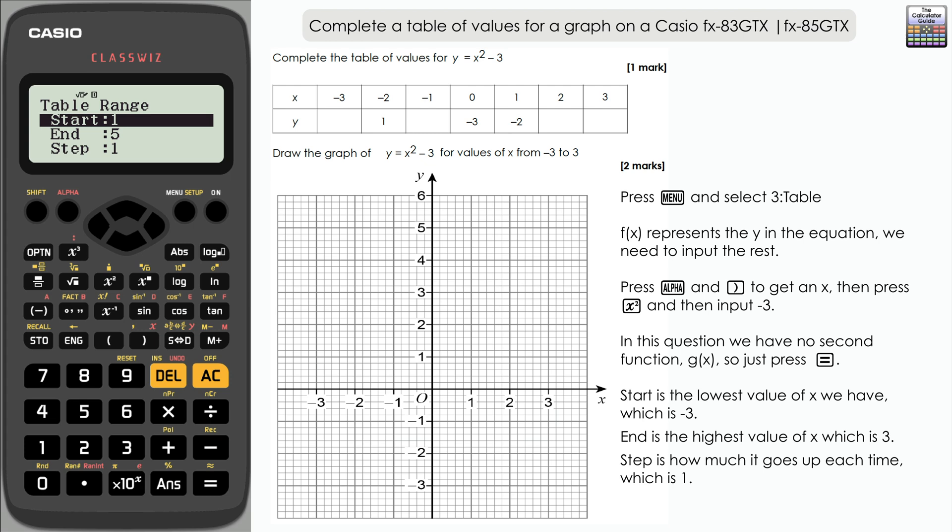The start is the lowest value in our table for x, that is negative three, and the end is the highest value that we have for x, which is positive three. And the step is how much it is increasing each time. Well, we've just got integer values so the step is one: negative three to negative two to negative one to zero to one, two, three, and so on. Press equals to confirm.